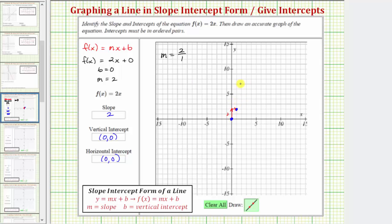We can do this multiple times: up two right one, up two right one, and so on. Now we know the graph of f of x equals 2x must pass through these points, and it will look something like this.